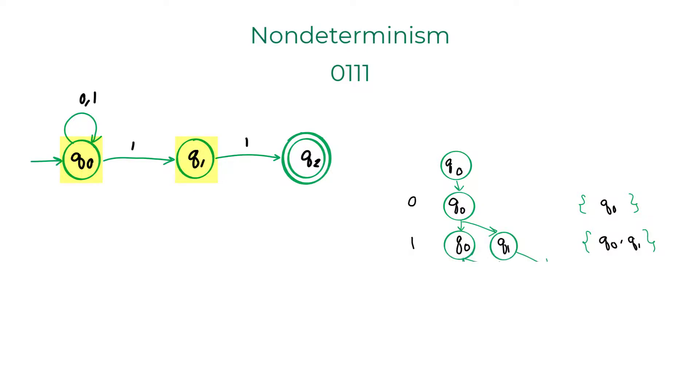When it reads another 1, it will be in Q0, it will be in Q1, it will be in Q2 as well. When it reads another 1, the same thing happens. Q0, Q1 and Q2.